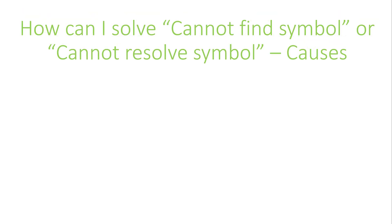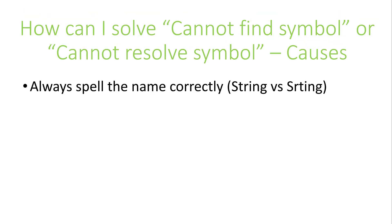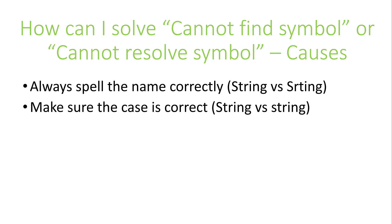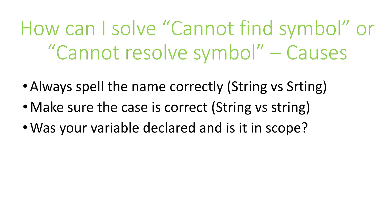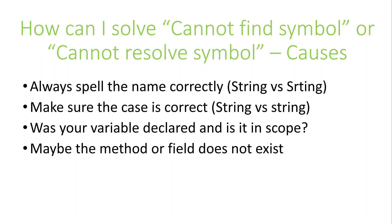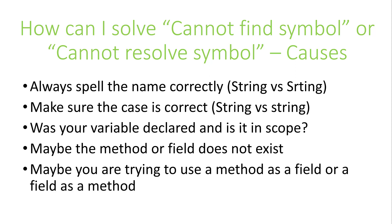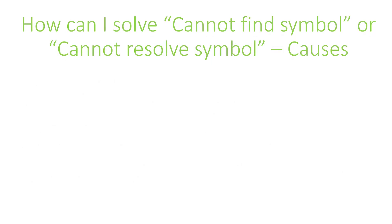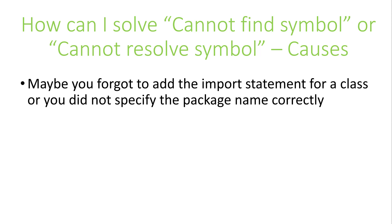For example, you may spell 'string' as s-r-t-i-n-g. The compiler will have no idea what that means. Make sure that your case is correct — spelling string with a lowercase s, for example. Remember that Java is always case-sensitive. Perhaps you're referring to a method or field that doesn't exist in the class, or it's not accessible from the location you're trying to use. Maybe you're trying to use a class method as a field, or a field as a method. Maybe you forgot to add an import statement for a class, or maybe you didn't specify the package name correctly in the import statement. This can be quite common.